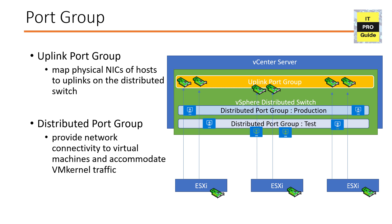You map your physical network card to the host so that it works as an uplink on the distributed switch. At the host level, each physical network interface connected to an uplink is assigned a particular ID. You can set failover and load balancing policies over uplinks, and these policies are automatically propagated to all ESXi hosts in that distributed switch.